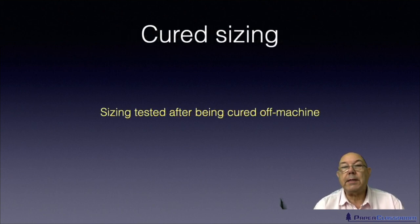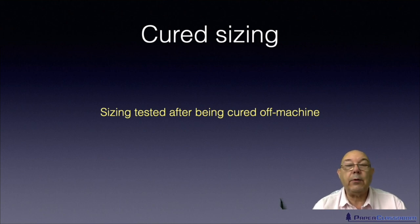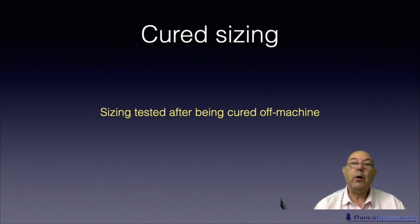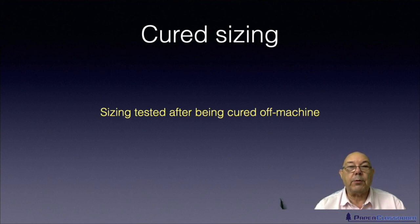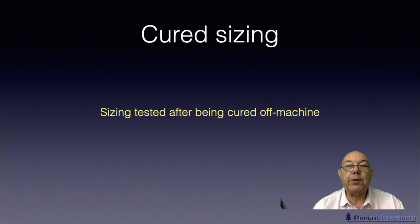The other thing that goes with on machine sizing is cured sizing. Some sizing products are completely sized when the sheet comes off the end of the machine. But with other materials, you take it off the machine and you can hardly measure any degree of sizing — yet when you wait a few days, the sizing magically develops. Since we can't wait to test it, we artificially age it: we take a sample from the reel and put it in an oven under standard conditions — usually something like 15 minutes at 105°C — and that develops the sizing the sheet will achieve in about two or three weeks. That is known as cured sizing.